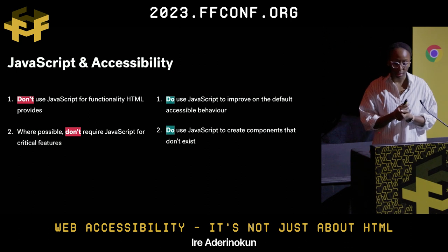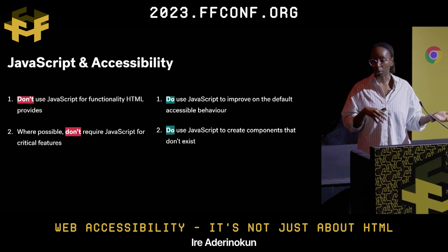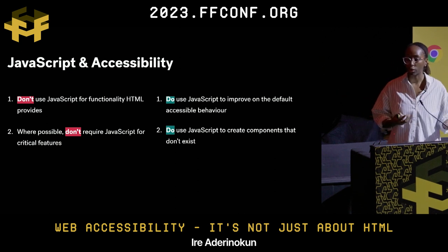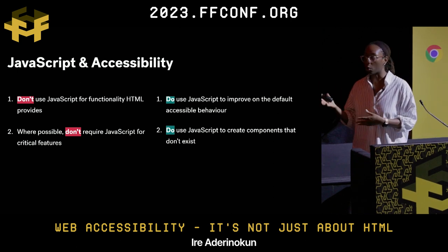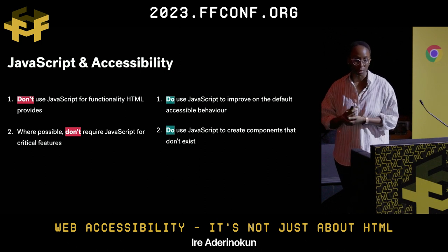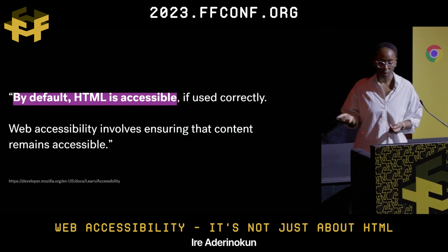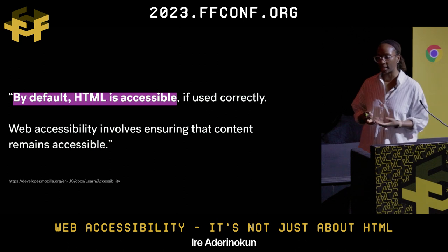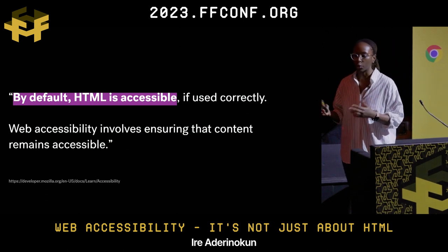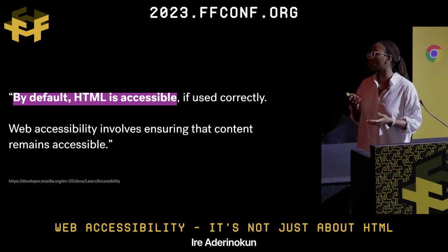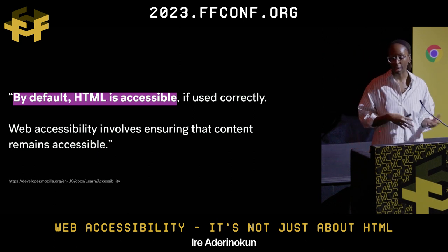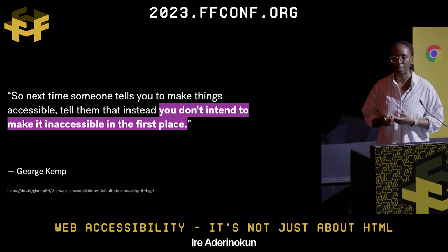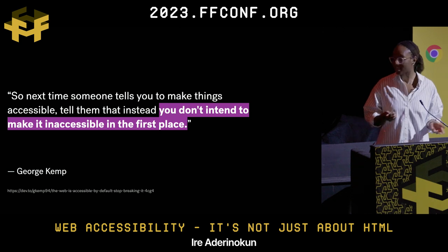To summarize: we shouldn't use JavaScript for what HTML can already do, and wherever possible we shouldn't require JavaScript for critical features — but we can definitely use JavaScript to improve default components, especially if they're not accessible enough, and also when creating new components. I love this quote because it represents a shift in how we think about web accessibility — instead of thinking you have a website and then need to make it accessible as an extra step, the default is that it is accessible. As George Kemp put it: if someone says 'make a website accessible,' you should instead say 'I'm not going to make it inaccessible in the first place.' Thank you.